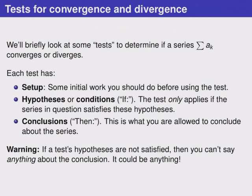Each test has three important parts. It has a setup, which is some initial work or calculation that we should do before using the test. It has hypotheses, also called conditions. These are labeled with the word IF. The test only applies if the series that we're trying to test satisfies these hypotheses, or meets the conditions. Finally, there are conclusions, listed with the word THEN. This is what we're allowed to conclude about the series, but only if the conditions have been met.